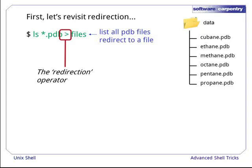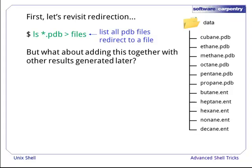And this is all made possible by the redirection operator. But what about adding this together with results generated later? In general, this would be very useful for any time we just want to add things to an existing file. In this example, let us consider a further set of protein data files in the older ENT format.